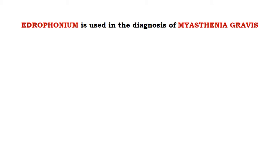Before going to the stepwise diagnosis of myasthenia gravis using edrophonium, one must keep in mind that edrophonium is used in the diagnosis of myasthenia gravis. So if somebody asks you which drug is used in diagnosing myasthenia gravis, your answer should be edrophonium, which is an acetylcholinesterase inhibitor.